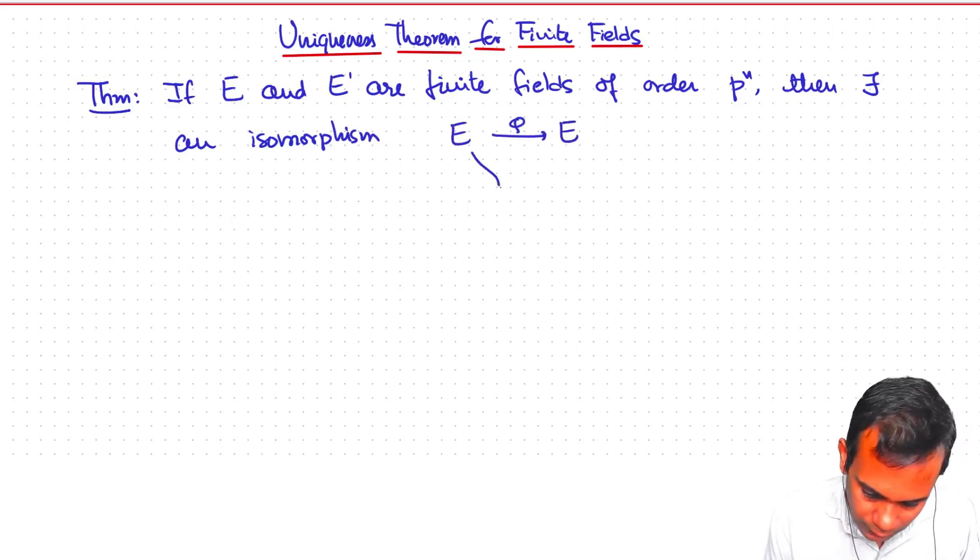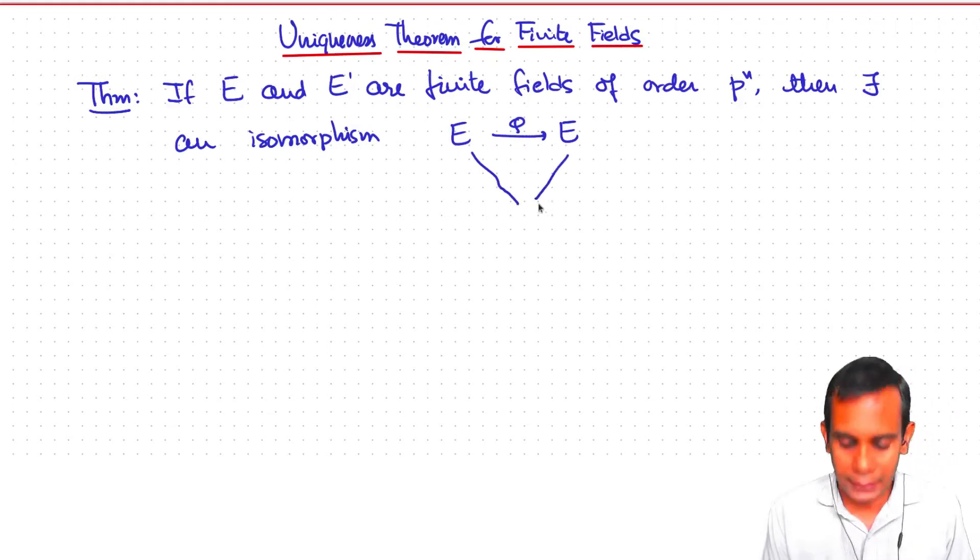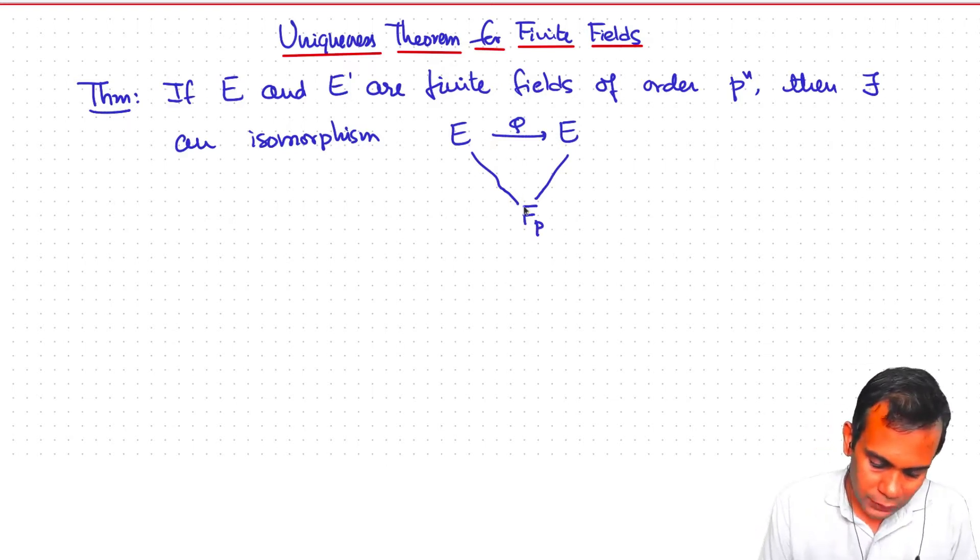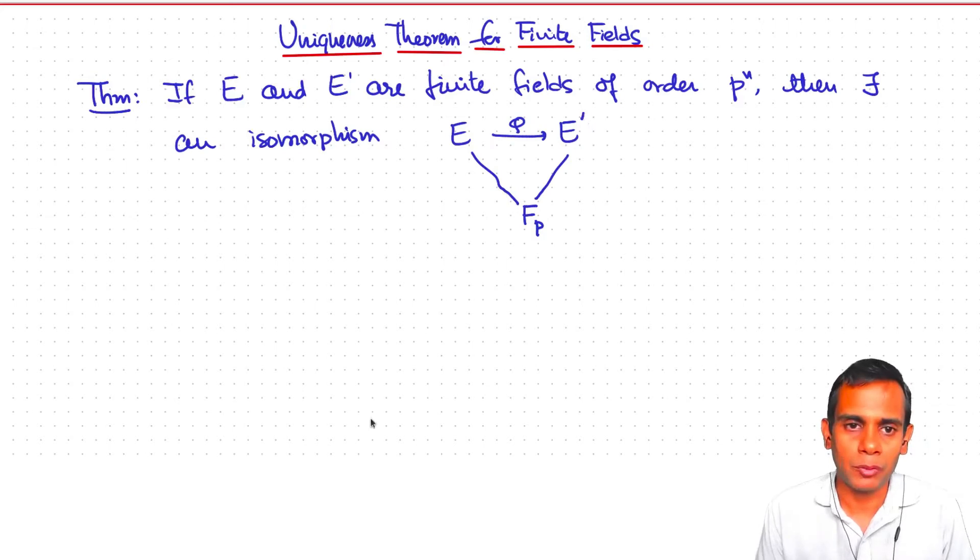And what is more, this is sort of a trivial observation, but I just want to say it here, is that this isomorphism will map the copy of Fp, which is obtained by taking one and adding it to itself how many other times, it will act by identity on Fp. So there is an isomorphism of field extensions E over Fp to E prime over Fp.